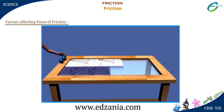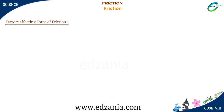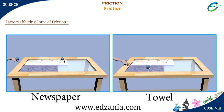Now we will change the surface and keep the object the same. Note the change carefully. What do you observe? The plastic ball covers more distance on newspaper than on a towel. We can conclude that the same moving object covers different distances on different material surfaces.